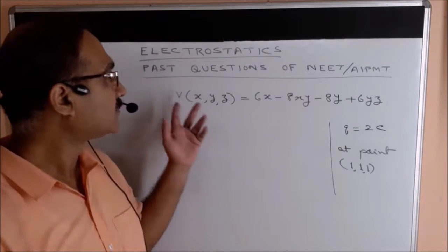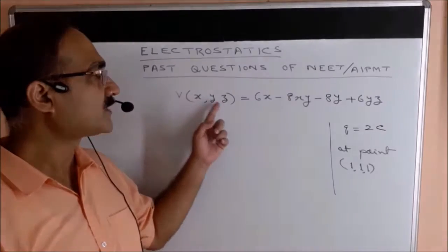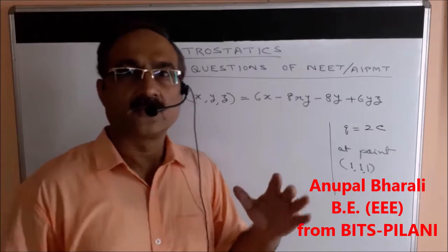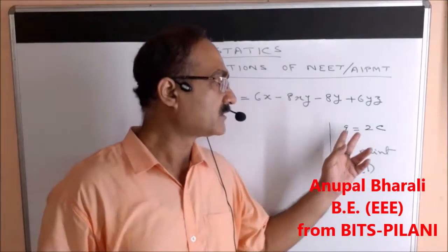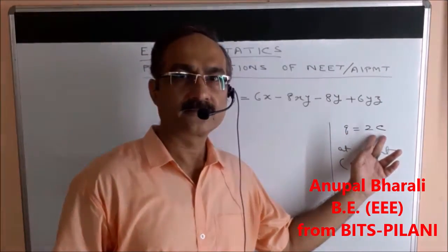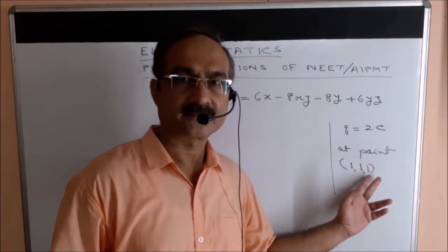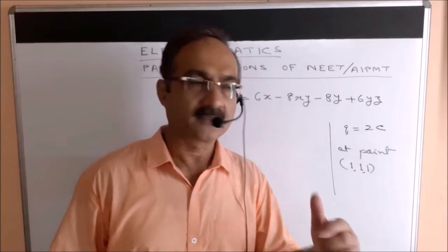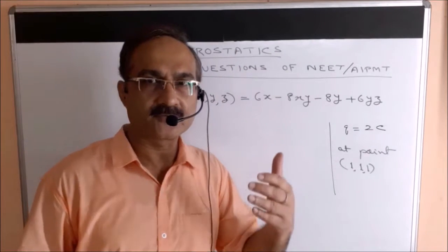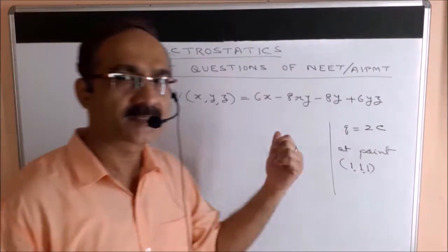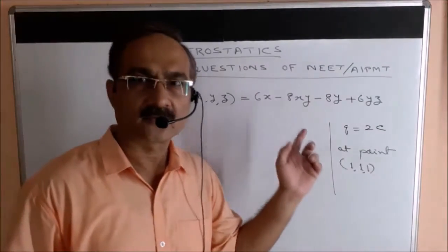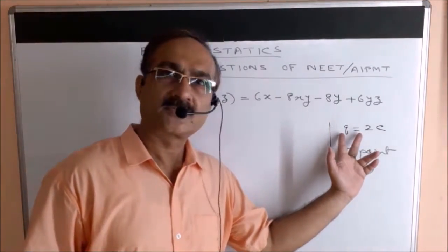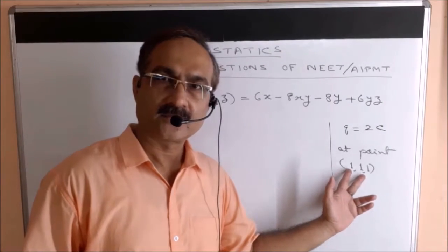In this question, the potential at the point (x, y, z) is given by a specific expression. We have to find the force experienced by a charge of 2 coulombs placed at the point (1, 1, 1). This question is similar to one that appeared in 2009, but here you have to do two more steps, making it a bit more complicated.